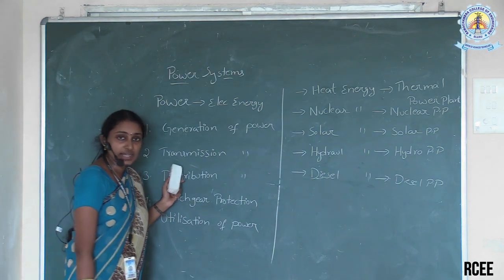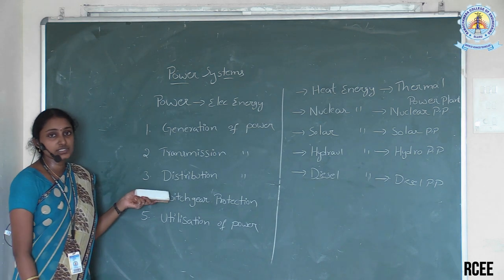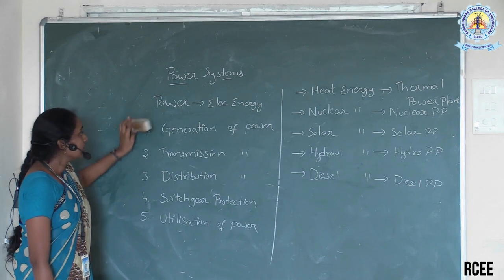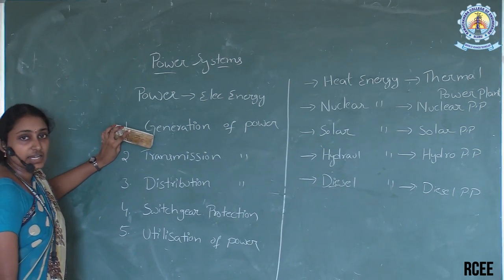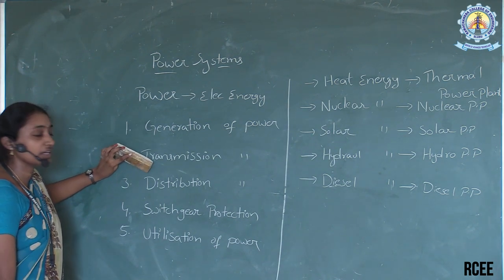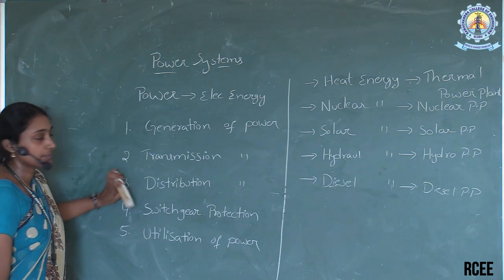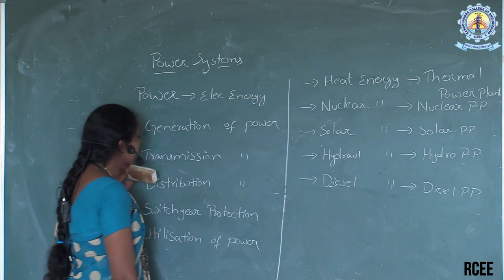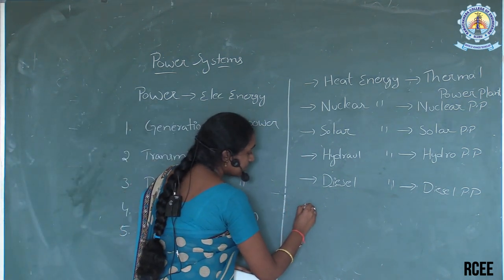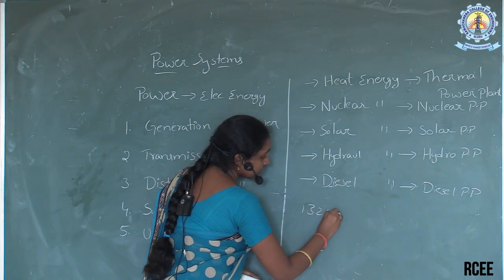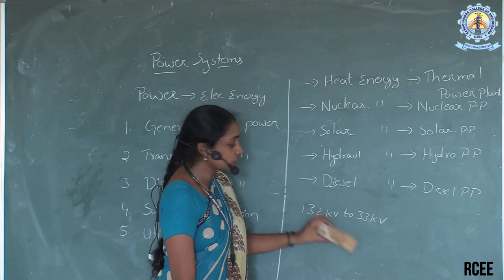We can classify transmission as short transmission lines, medium transmission lines, and long transmission lines. Next is the distribution system. After generation and transmission, why can't we directly utilize that power? Because at the end of the transmission system, the voltage level is very high. So for different consumers, we have to decrease the voltage levels — that comes under the distribution system. Distribution system involves substations after the transmission line. Those transmission lines are connected to substations, where nearly 132 kV is stepped down to 33 kV.